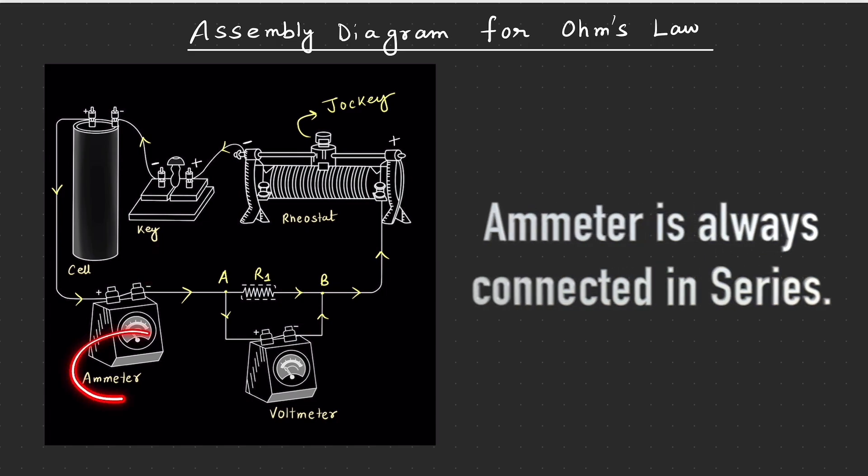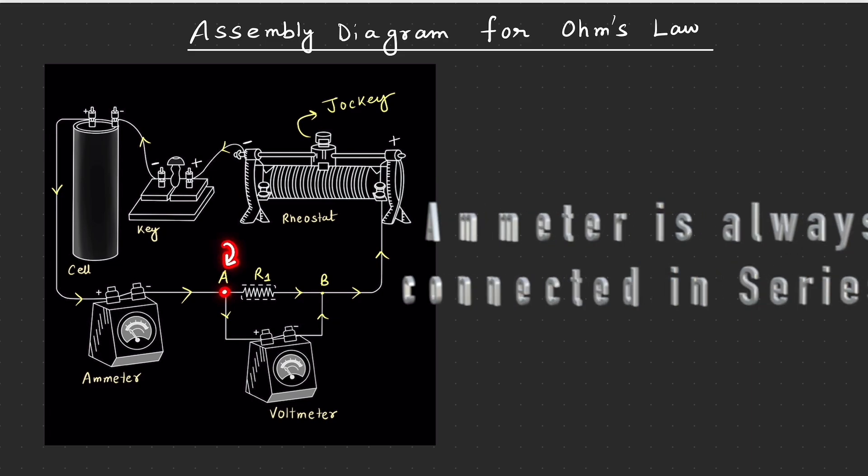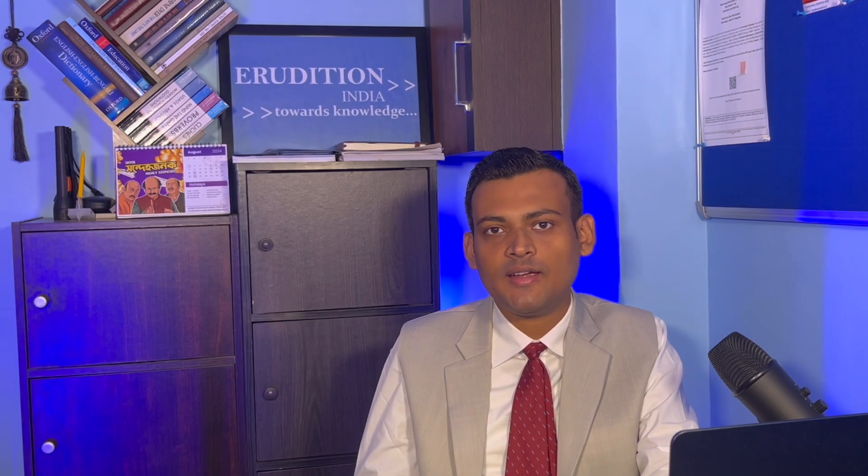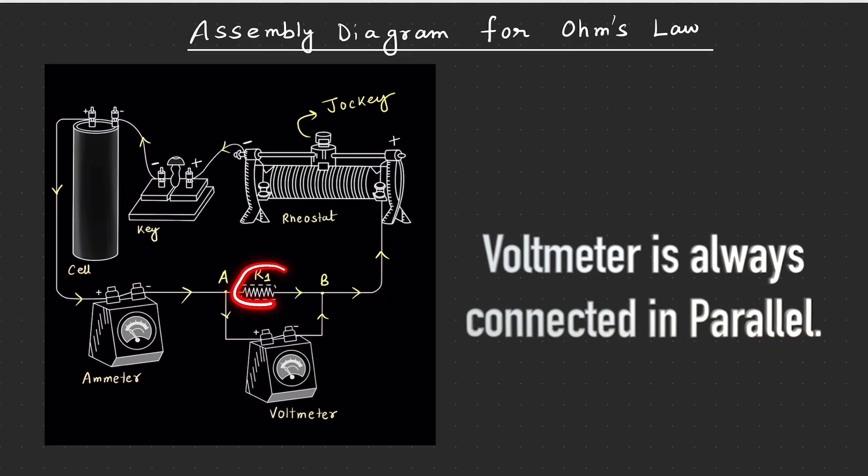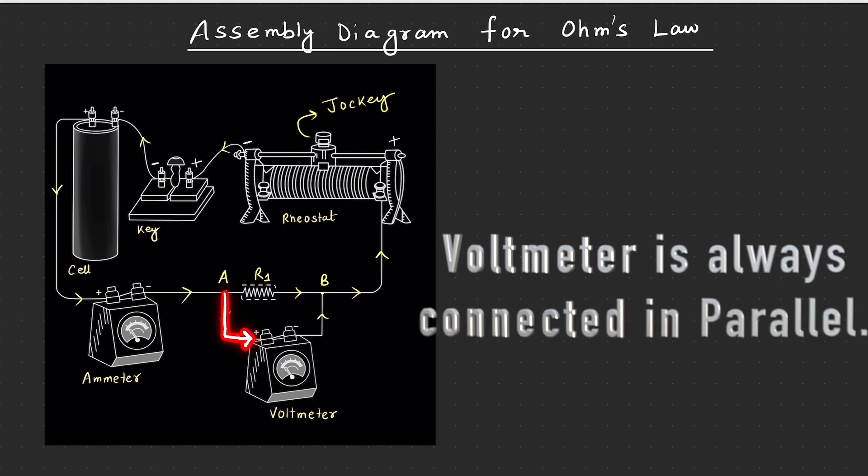Upon leaving the ammeter, ek junction point yahaan per hai, which is junction point A. At this junction point, the current is getting divided. Kuch current pass through kar raha hai R1 naam ke resistor se, while kuch current voltmeter ko enter kar raha hai through the positive terminal.